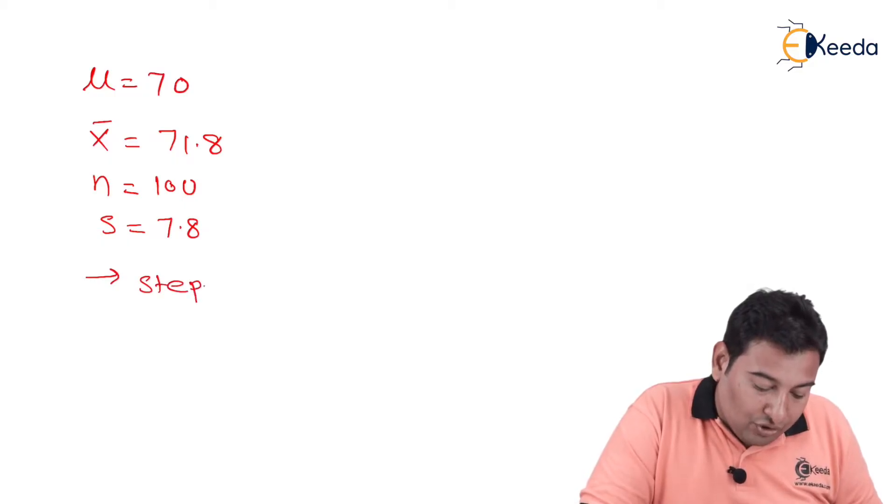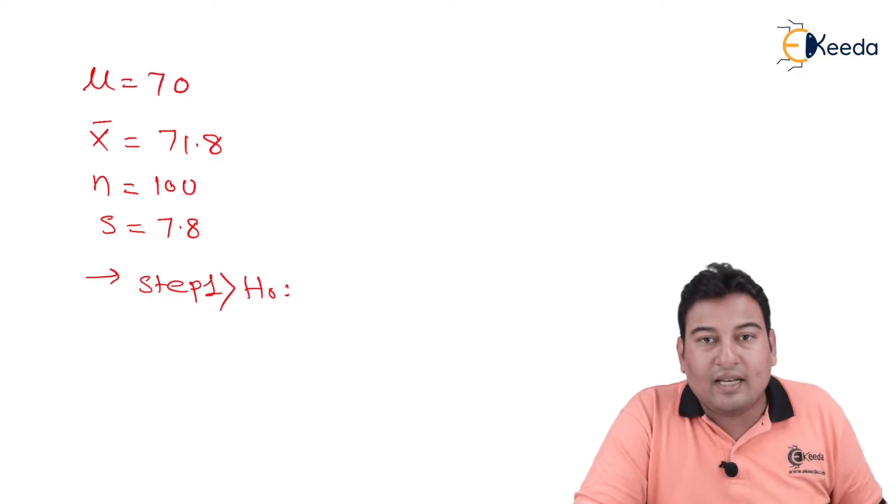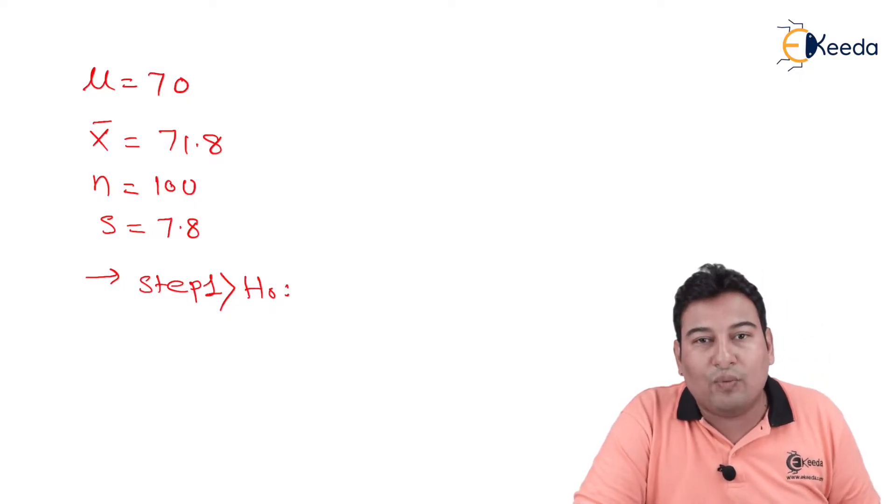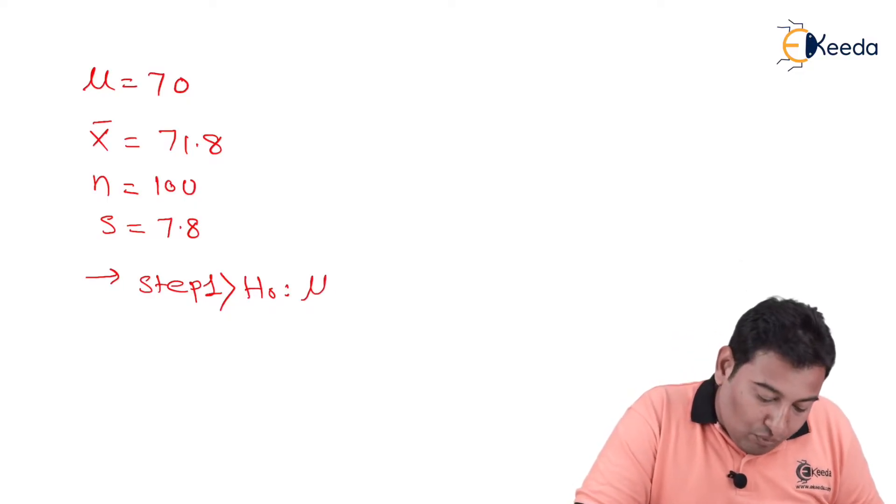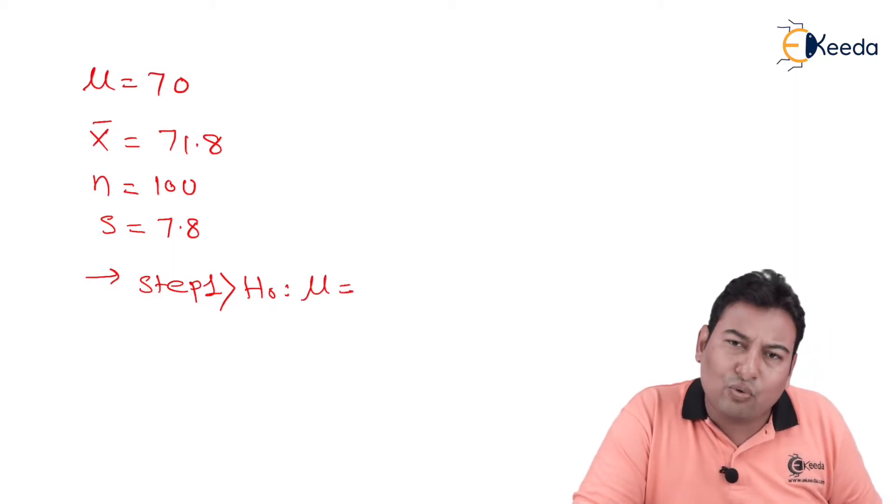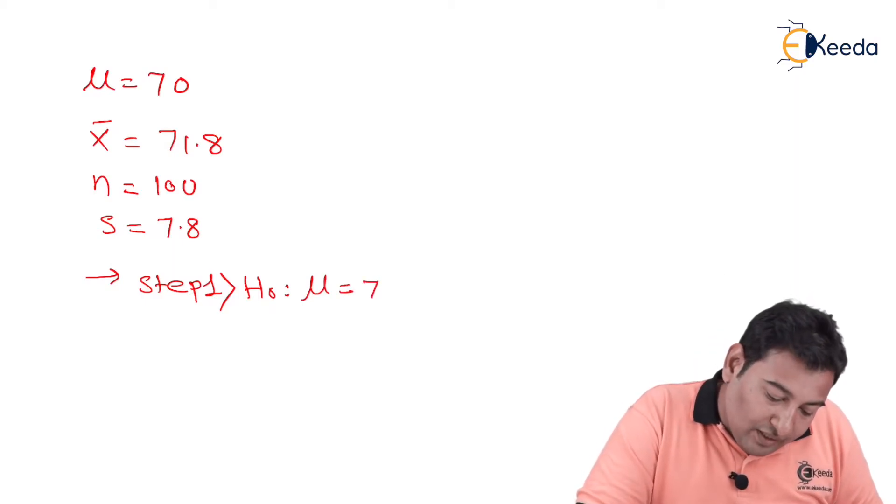Let us start with the first step. Step number 1 is your null hypothesis, that is your H₀. And as we have discussed, μ is equal to given, and that is fixed. So μ equal to whatever is given, we're going to take it as is. So that is 70.